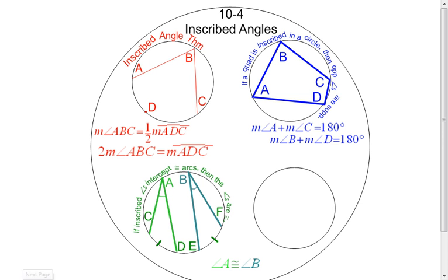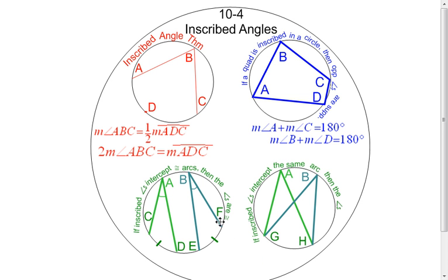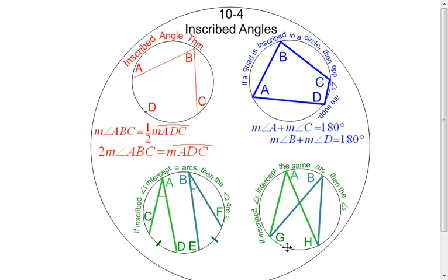And then on my last one, it's similar to this one. But now notice this one says if the inscribed angles intercept the same arc. So instead of angle A going to an arc and angle B going to an arc, angle A is going to arc GH. That's the intercepted arc. And angle B has the same, or the congruent, or yeah, the same intercepted arc.